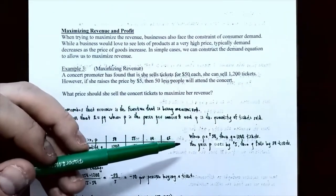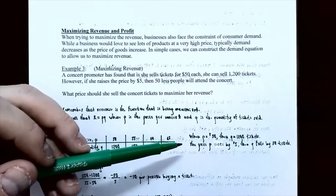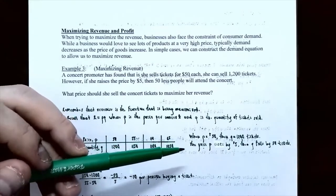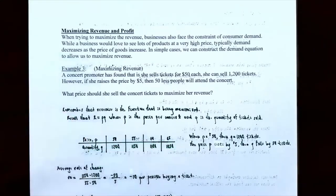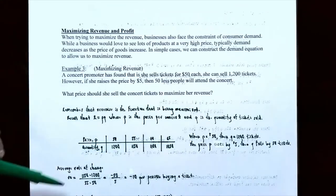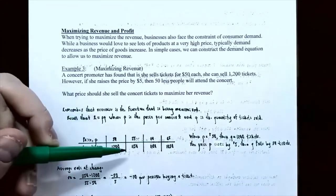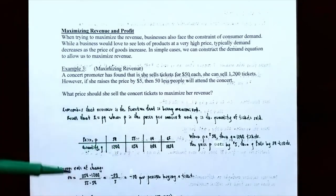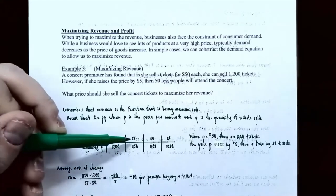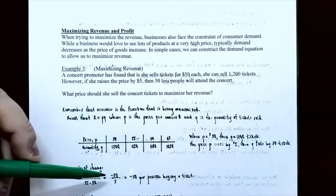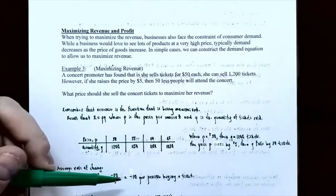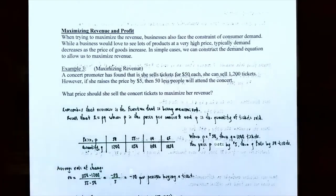Notice in the problem that every time you increase the price by $5, 50 fewer people will attend. That's a constant rate of change, so the demand is a linear function. Let's find the slope or the average rate of change for the table of values. Using the first two points: (1,150 − 1,200) divided by (55 − 50) gives you negative 50 divided by 5, which gives you negative 10. So the average rate of change or the slope is negative 10 for the demand equation.